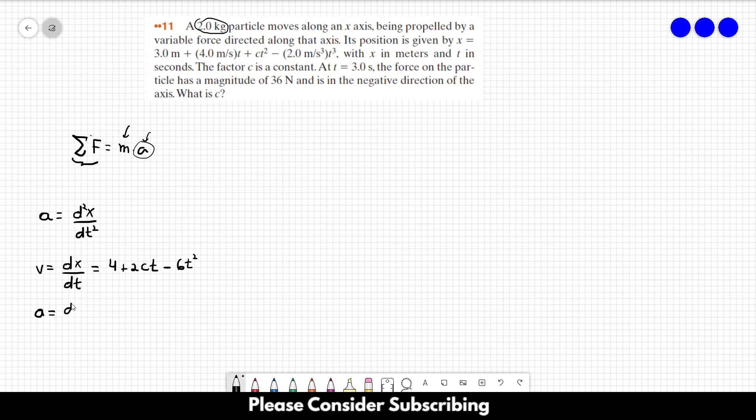The acceleration, we have to derive x two times, or just derive the velocity that we just found. And this gives us 2c minus 12t. So this is the acceleration.